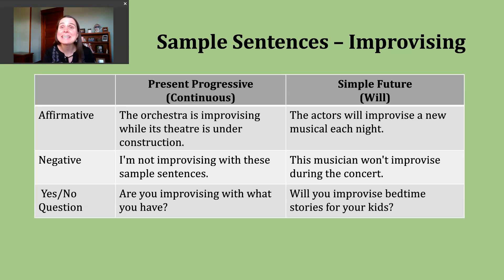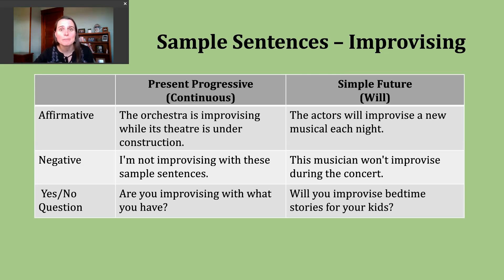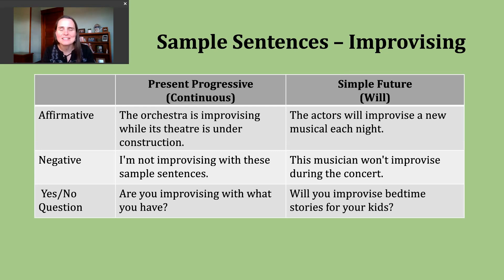Now let's talk about making negative present progressive sentences. I start with a subject, and depending on what that subject is, I use am, are, or is, then not, and then the -ing form of the verb. Here's another example sentence: I'm not improvising with these sample sentences — I'm not making them up off the top of my head. You can see I've written them down before I started making this video.